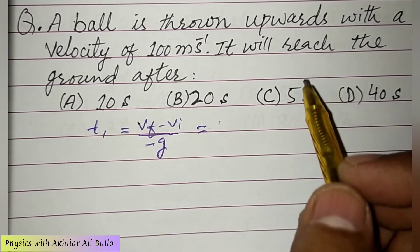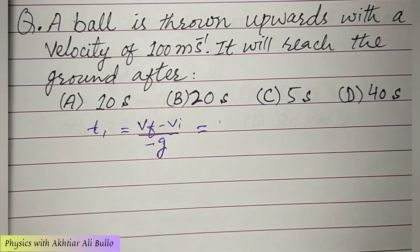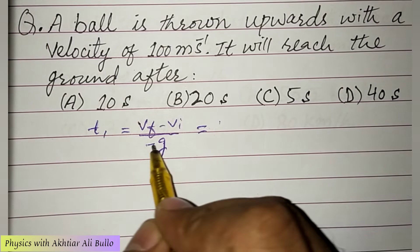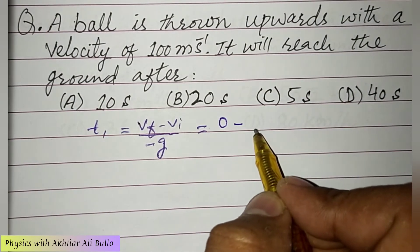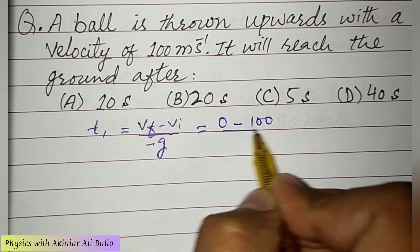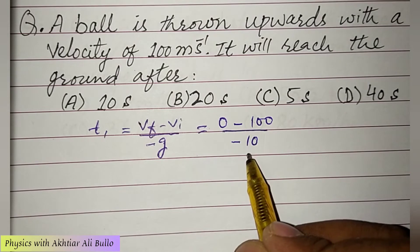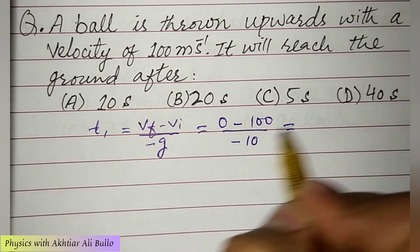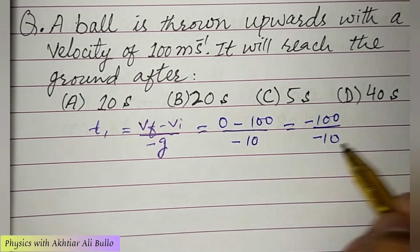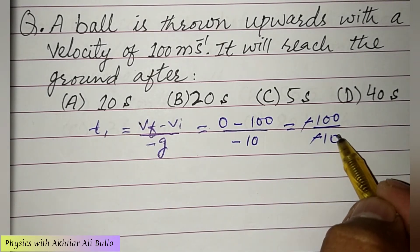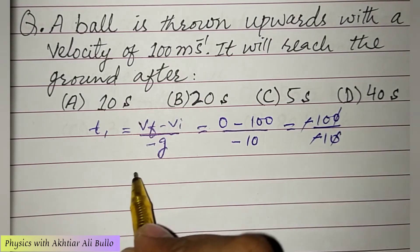When ball reaches up to certain height, then it will come to rest for few seconds, so vf is 0. Minus vi is 100 divided by minus g. g is 10 meter per second square, so minus 100 upon minus 10. Minus will be cancelled with the minus, and this 0 will be cancelled with this 0, so t1 is obtained as 10 seconds.